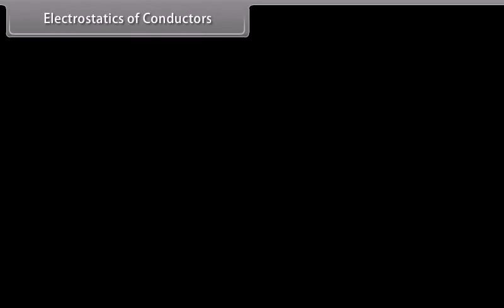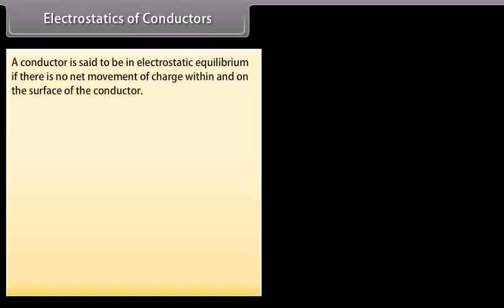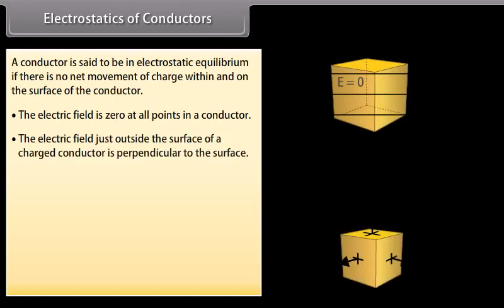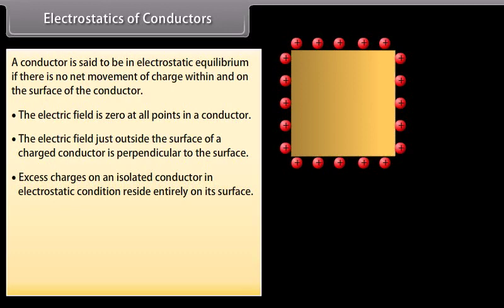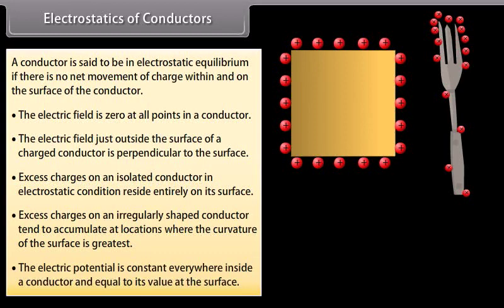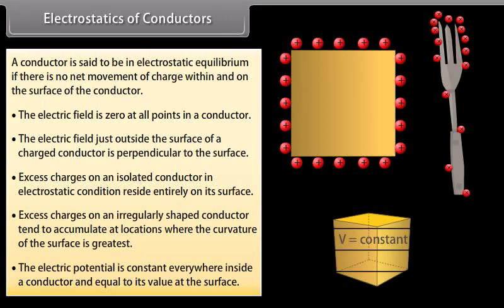Electrostatics of conductors. A conductor is said to be in electrostatic equilibrium if there is no net movement of charge within and on the surface of the conductor. The electric field is zero at all points inside a conductor. The electric field just outside the surface of a charged conductor is perpendicular to the surface. Excess charges on an isolated conductor reside entirely on its surface. Excess charges on an irregularly shaped conductor tend to accumulate at locations where the curvature of the surface is greatest. The electric potential is constant everywhere inside a conductor and equal to its value at the surface.